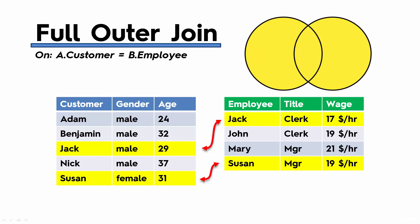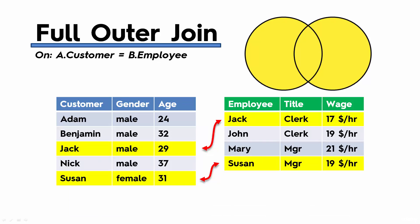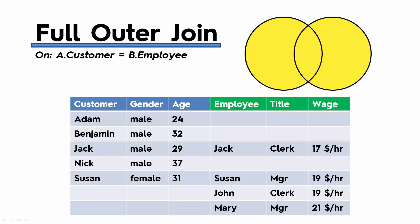Finally, a full outer join looks at all rows in both tables — that's why you see both circles in the Venn diagram fully highlighted. The join will not discard any rows from either table. Jack is matched with Jack, Susan with Susan, and then no rows are discarded. On the right there are blank spaces where there was no match to the left table, and on the left there are blank spaces where there was no match to the right table. That is what the final result looks like.